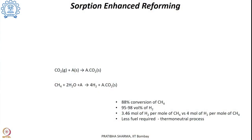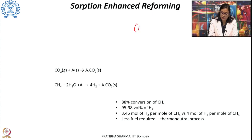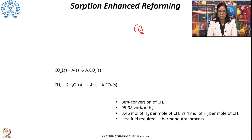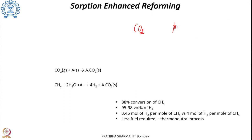The methods we are going to discuss today are still at the demonstration scale and not being used on a commercial scale. One of these methods is sorption enhanced reforming. In sorption enhanced reforming, the product carbon dioxide which is obtained is selectively removed such that the limitation of chemical equilibrium is removed and the reaction proceeds toward formation of the product.